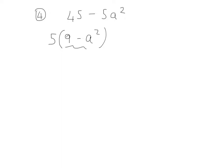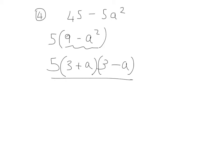We can do a difference of two squares with 9 minus a squared: bracket with a plus, bracket with a minus. The square root of 9 is 3, and the square root of a squared is a. Remember the 5 at the front. The final answer is 5 bracket 3 plus a, bracket 3 minus a.